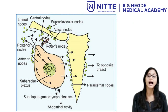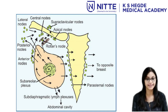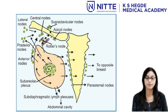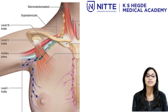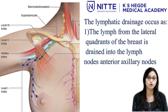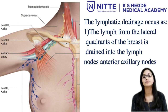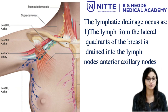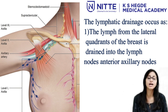The subareolar plexus and most of the lymph from the breast drain into the anterior group of axillary lymph nodes. The superficial lymphatics of the breast of one side communicate extensively with those of the opposite side; thus, unilateral malignancies can become bilateral. The lymph from the lateral quadrant of the breast is drained into the anterior axillary or pectoral group of lymph nodes, which are situated deep to the lower border of the pectoralis minor muscle.